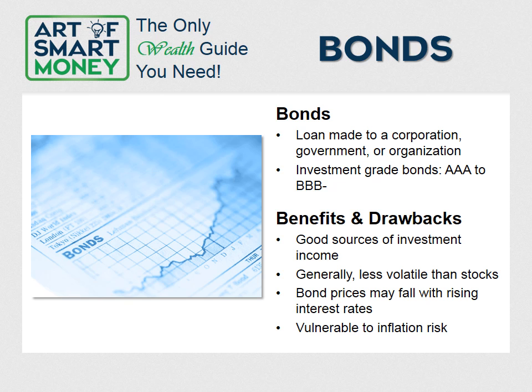Let's look at bonds — another very common investment. A bond is a loan that you make to a government, corporation, or other entity. Bonds are part of a category called fixed income investments because in exchange for loaning them your money, the bond issuer agrees to pay you interest and eventually pay back the principal. The interest rate is determined by prevailing market rates and also the risk associated with purchasing the bond. Rating agencies like Moody's and S&P use rating designations to indicate the credit quality of the bond and the issuer.